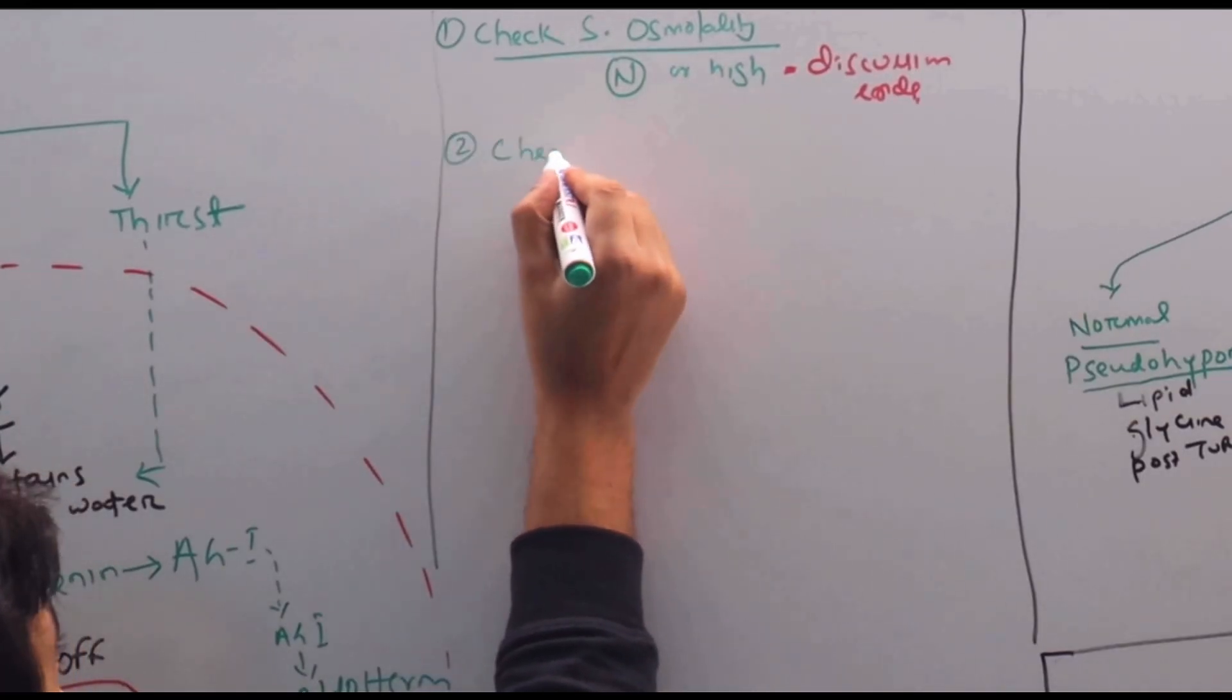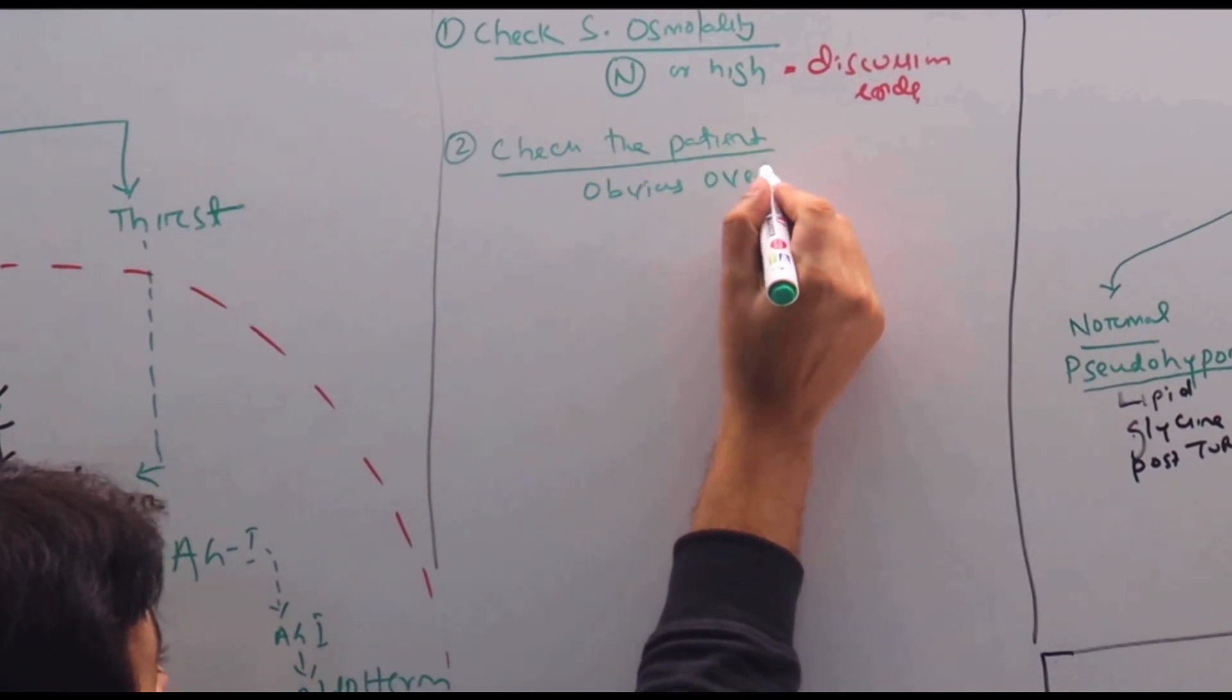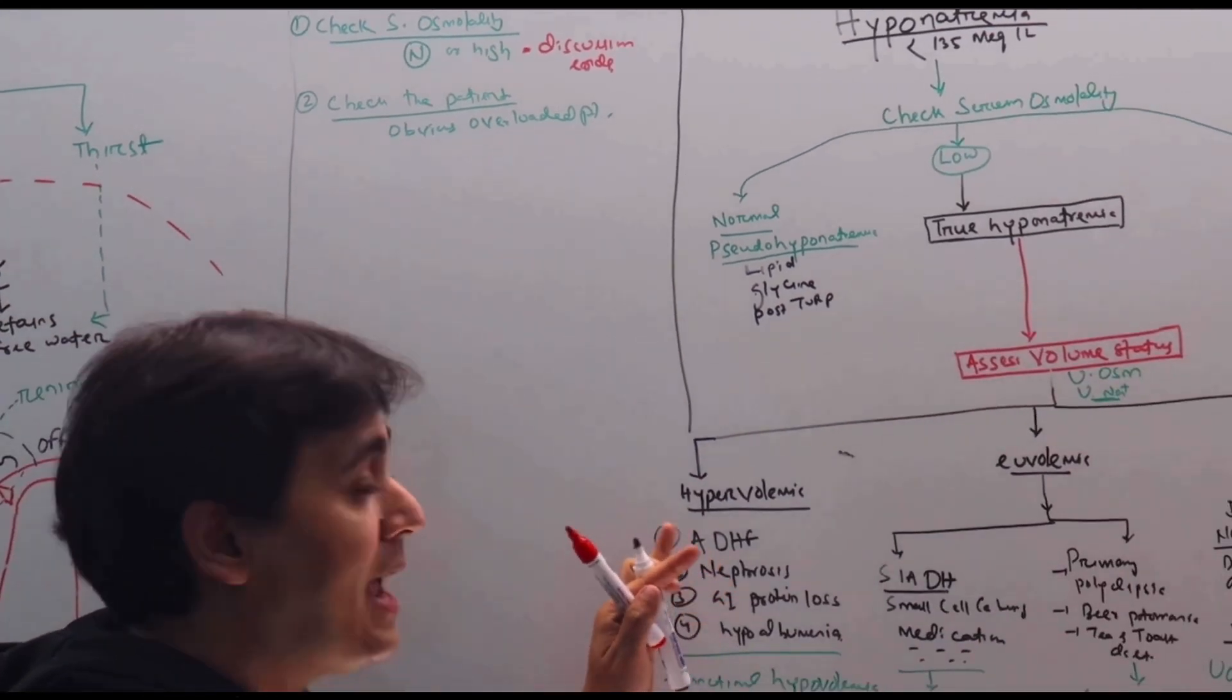Second step is check the patient. If you have an obviously overloaded patient, this hyponatremia is due to hypervolemia.